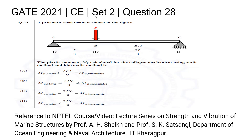GATE 2021 civil engineering set 2, question 28: A prismatic steel beam is shown in the figure and the plastic moment mp calculated for the collapse mechanism using static method and kinematic method. Option A: mp static > 2PL/9 = mp kinematic. Option B: mp static = 2PL/9 ≠ mp kinematic. Option C: mp static = 2PL/9 = mp kinematic. Option D: mp static < 2PL/9 = mp kinematic.